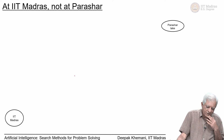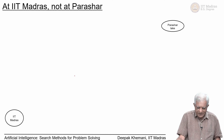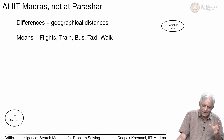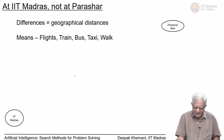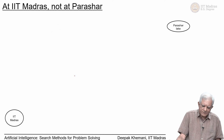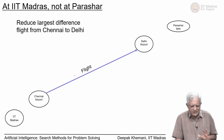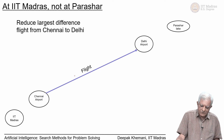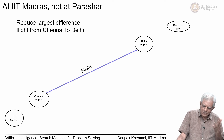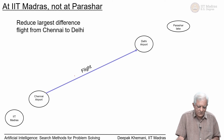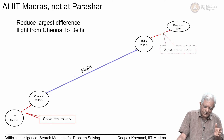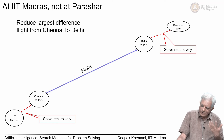Your problem is that you are sitting at IIT Madras and you want to be at Parashar Lake. You consult your operator-difference table: the differences are geographical distances, and the means available are flights, trains, bus, taxi, or walking. You reduce the largest difference — you can take a flight from Chennai to Delhi. This is how humans plan: address the largest thing first, then worry about how to get from IIT Madras to Chennai airport and from Delhi airport to Parashar Lake, solved recursively.